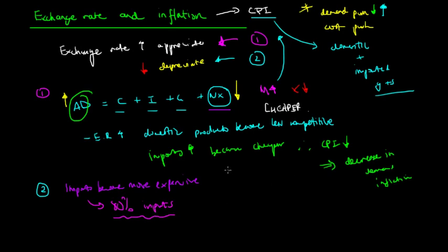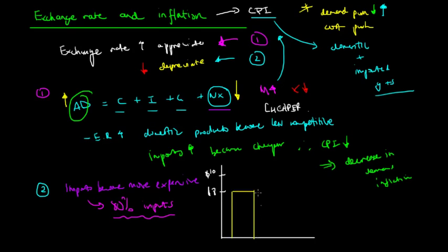We talked about the markup — how producers want to keep a profit of $2, say, for a product. Initially, it costs $8 to produce, and the markup — the profit, denoted as pi — is $2. This $8 is the cost of production, which we'll call COP.